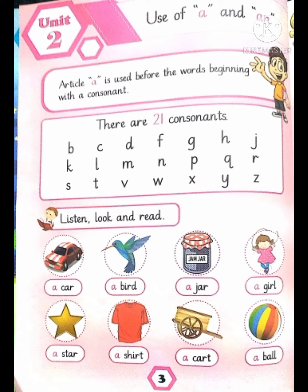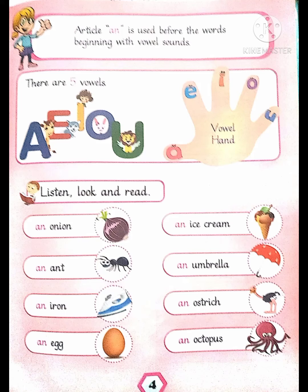Okay students, page number four. Article 'an' is used before words beginning with vowels. There are five vowels: a, e, i, o, u. Listen, look and read: an onion, an ant, an iron, an egg, an ice cream, an umbrella, an ostrich, an octopus.